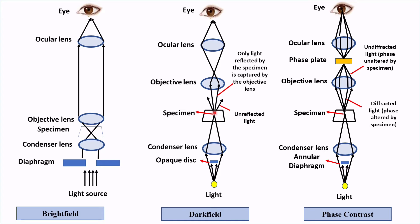We have already talked about bright field and dark field microscopy in our previous videos, and we found that a simple modification is done in the dark field microscope compared to bright field microscope — an opaque disc is attached between the light source and condenser lens. Now, in phase contrast microscope, two simple modifications have been done.